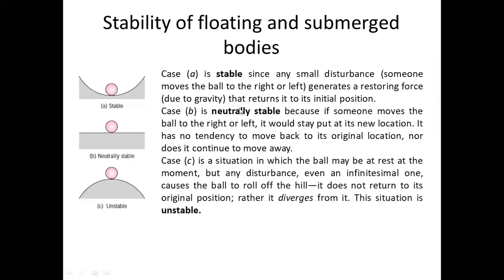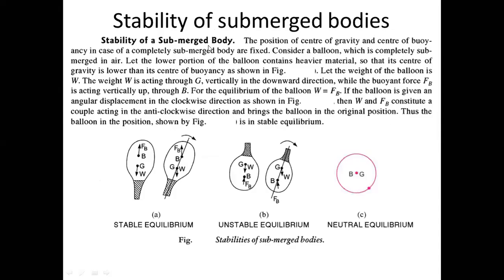Now let us discuss the stability of submerged bodies. A submerged body means the body is completely inside the liquid. When this body is completely inside the liquid, it has two important points: the center of buoyancy (CB) and the center of gravity (G). In this example, the center of buoyancy is above and center of gravity is below because extra weight has been added to the bottom of the body, shifting the center of gravity downward.